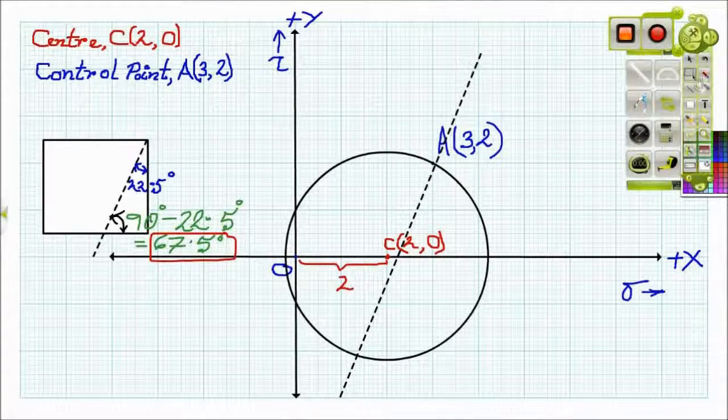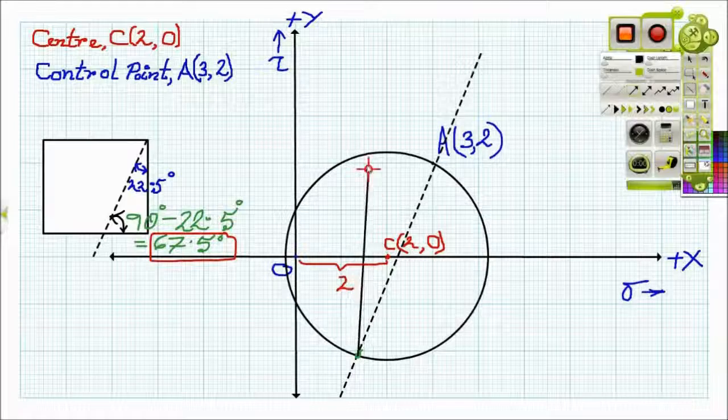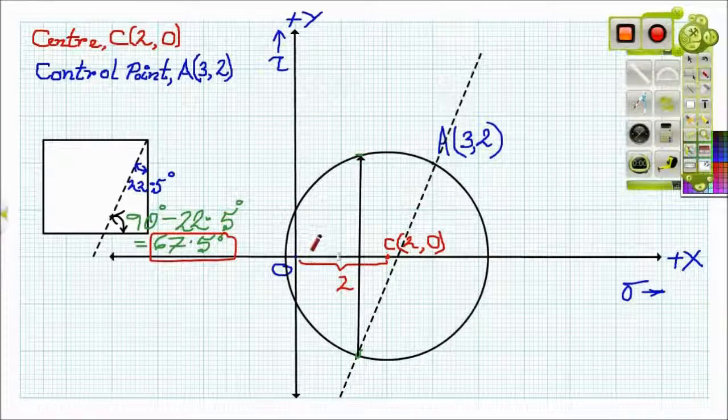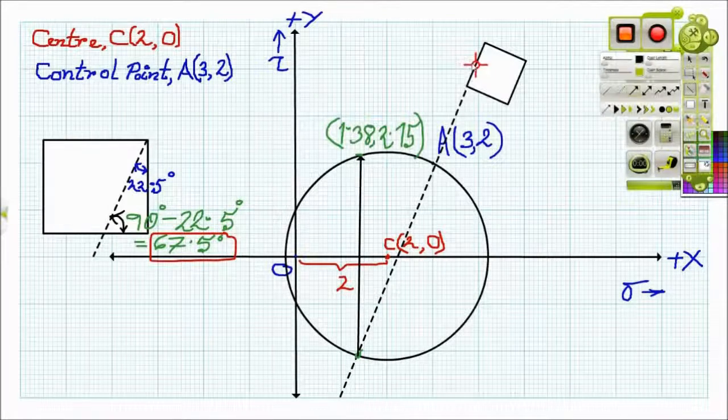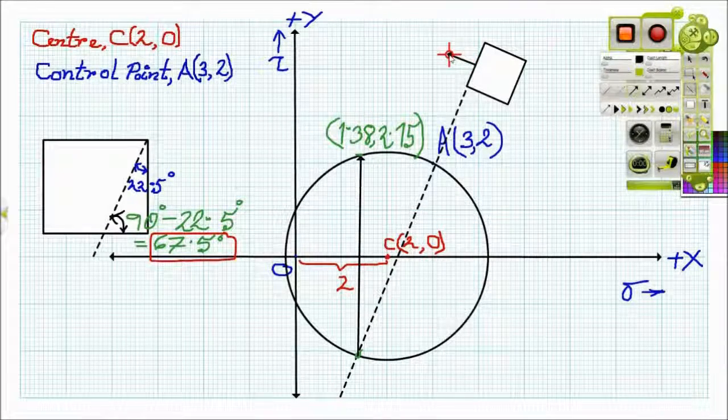Now, let's get the point which is vertically opposite to that intersected point. And the coordinates of that point is 1.38 and 2.15.